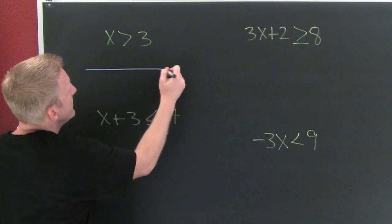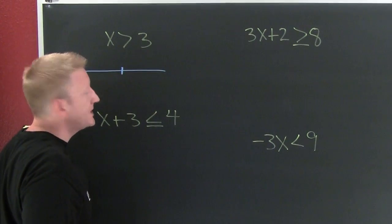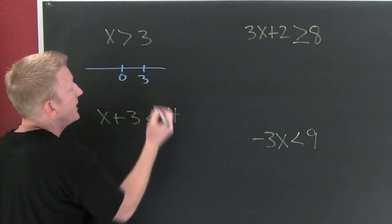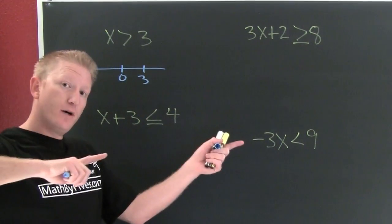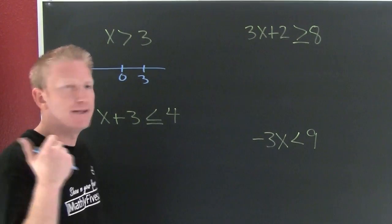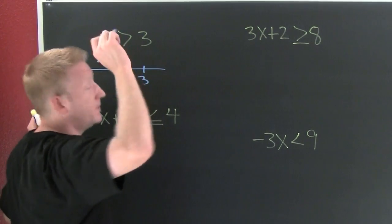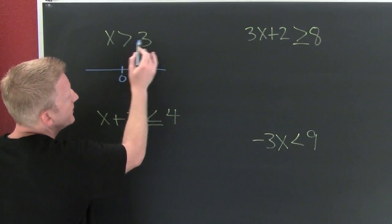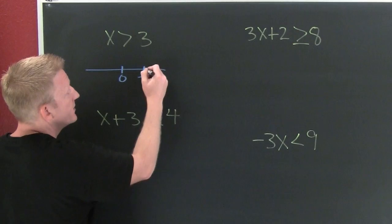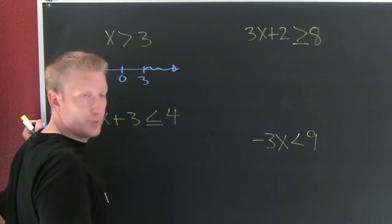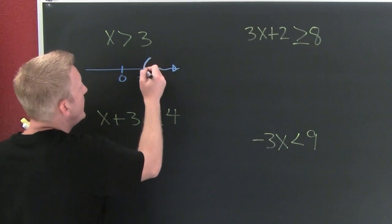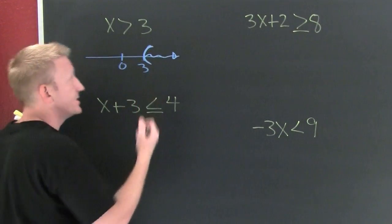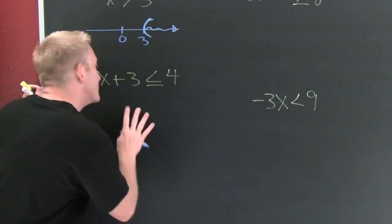Now I need to graph it. That's zero, and three goes right about there. Which way do I shade? The appropriate way is to plug a point in: is zero bigger than three? No, so I shade away from zero. Is it going to be open or closed? It's going to be open — shown by a round bracket or parenthesis.